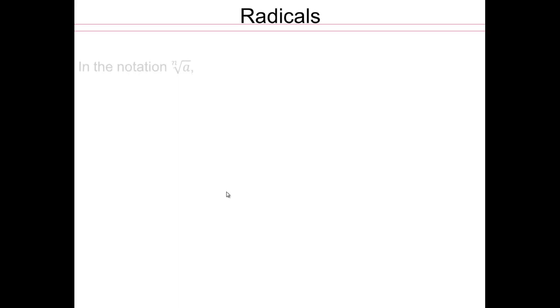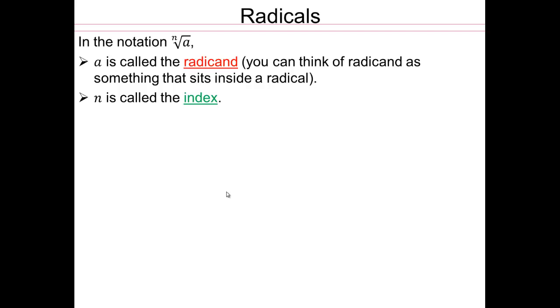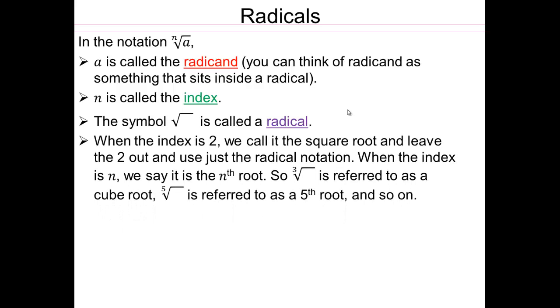So in the notation nth root of a, a is called the radicand. n is called the index. So this a that sits on the inside of that symbol is called radicand. And this is called the index. Again, just like we made sure you understood base and exponents, you want to make sure you can identify radicand and index. So that symbol is called a radical. When the index is 2, we call it square root and leave the 2 out and use just the radical notation. When the index is n, we say nth root. So that would be cube root here. Can you see? So that would be cube root. This would be fifth root and so on.